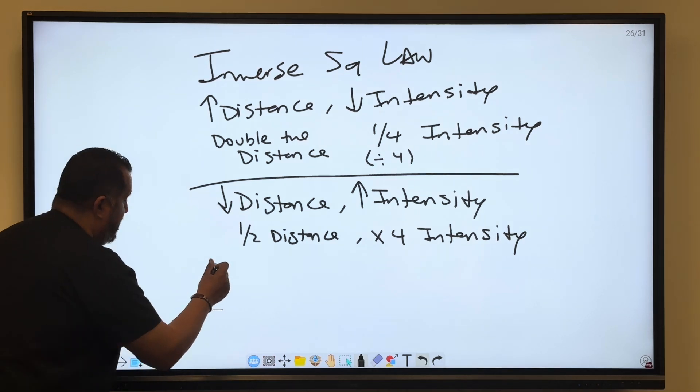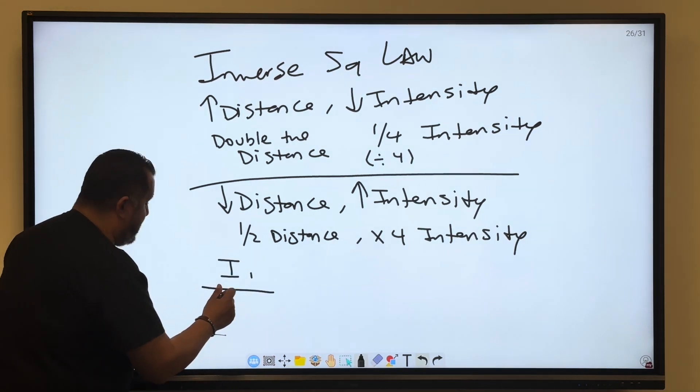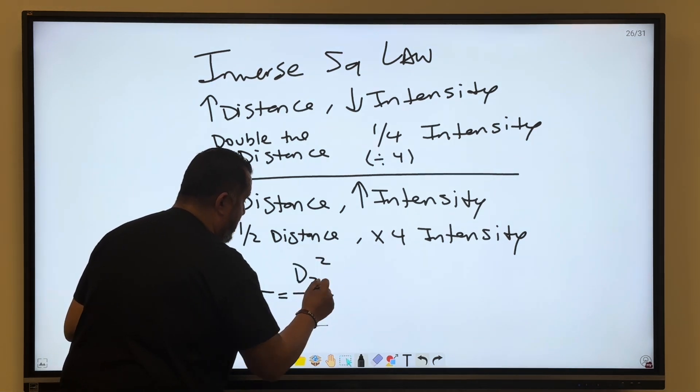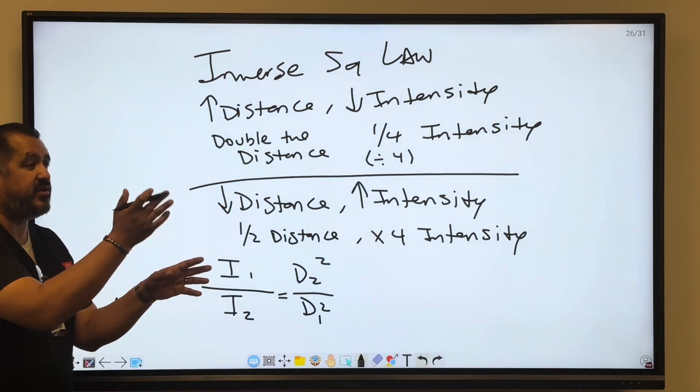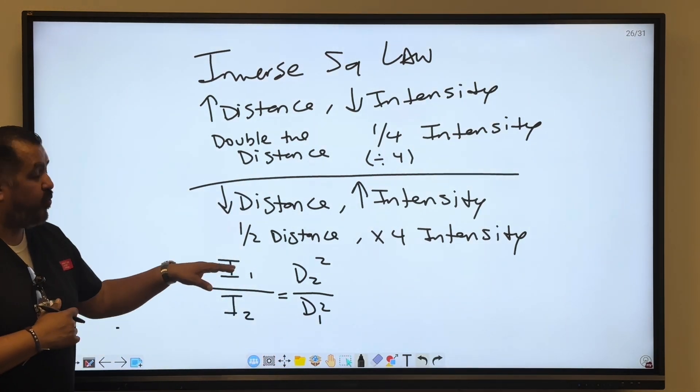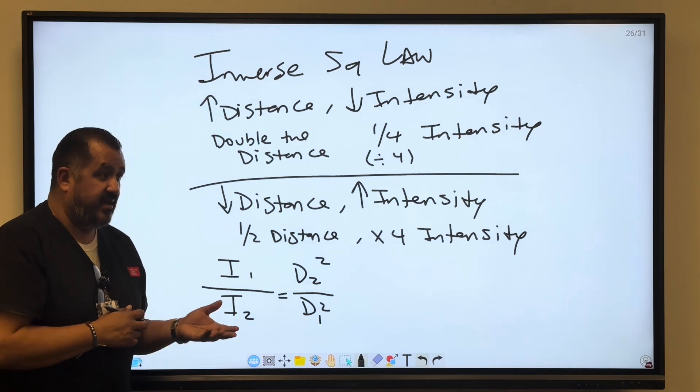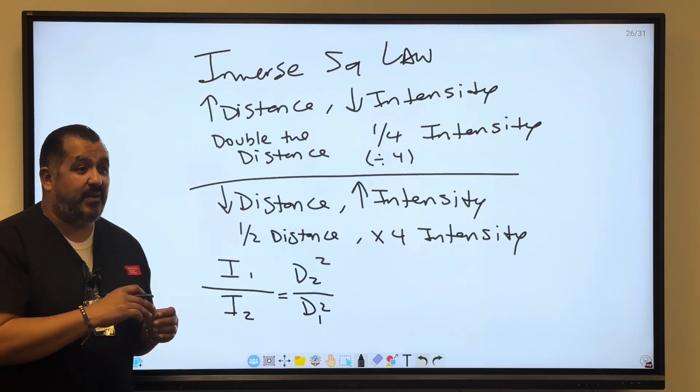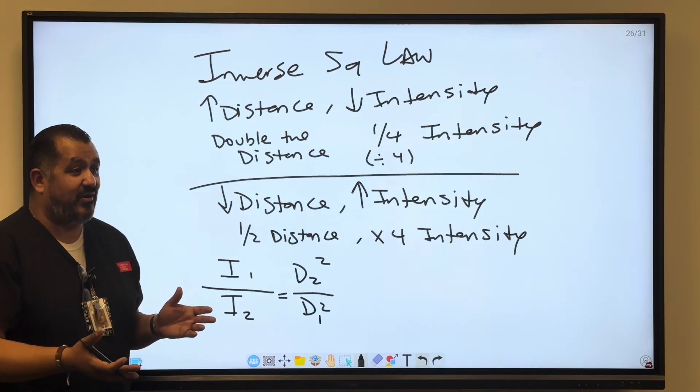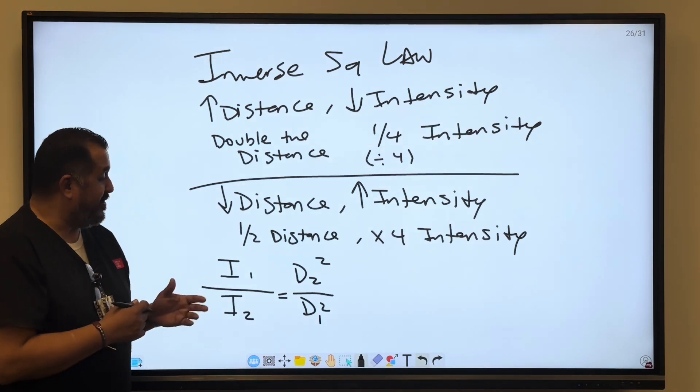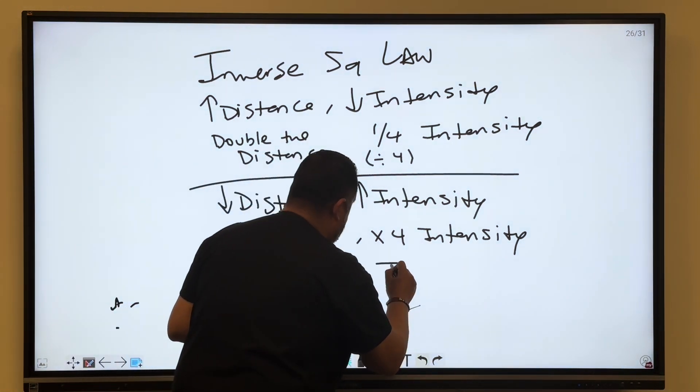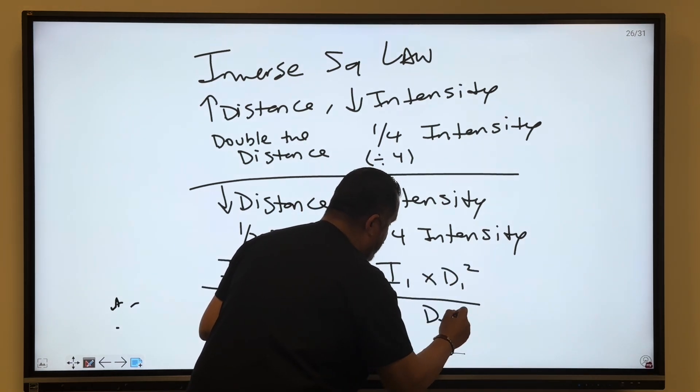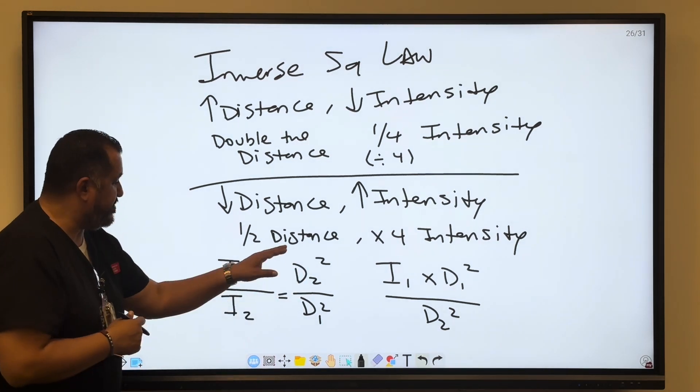So the formula is going to be I1 for original intensity over I2 equals D2 squared over D1 squared. So they're inversely related. This is one way to construct the formula. I know there's several different ways to do the formula. The other one is I1 times D1 squared over D2 squared. You're still cross-multiplying, you're still dividing.